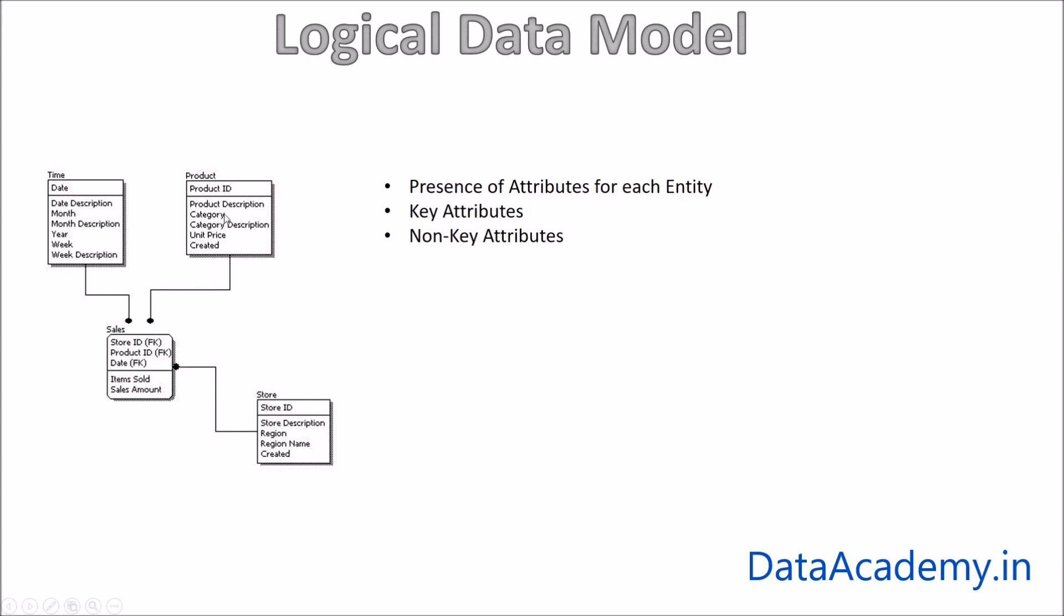An example is the category in the product entity. So category is something that could repeat for a number of records, hence it's a non-key attribute, and that is why it is listed below the line in this entity.